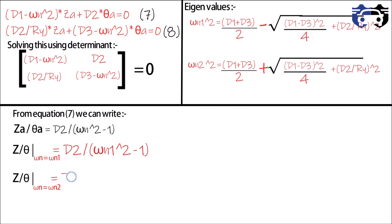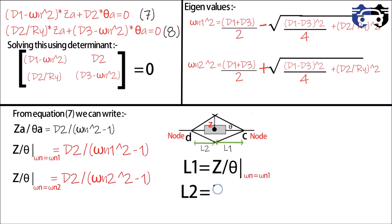So the value of z by theta at omega n equals to omega n1 can be written as D2 divided by omega n1 square minus one, and z by theta value at omega n equals to omega n2 can be written as D2 divided by omega n2 square minus one. From the figure you can write L1 equals to z by theta at omega n equals to omega n1, and L2 equals to z by theta at omega n equals to omega n2.